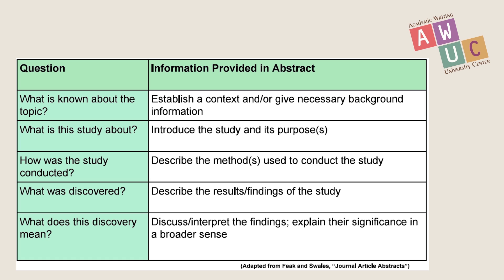These questions correspond to the information provided in the abstract. The first question asks: What is known about the topic? The answer establishes a context and gives background information. What is this study about? The answer introduces the study and its purposes. How was the study conducted? This describes the methods used. What was discovered? This describes the results and/or findings of the study. What does this discovery mean? Here the writer-researchers can discuss and interpret their findings or explain their significance in a broader sense.